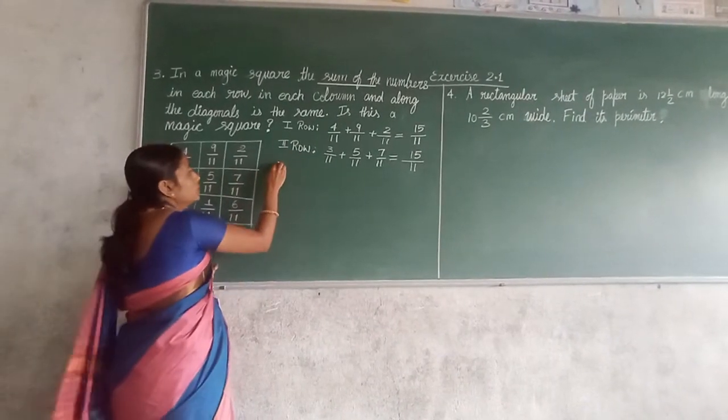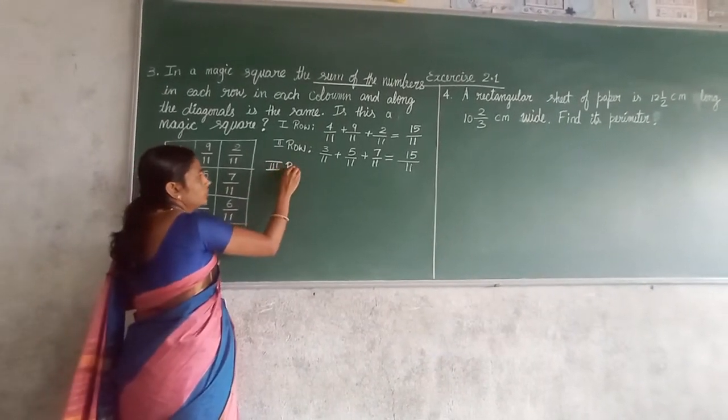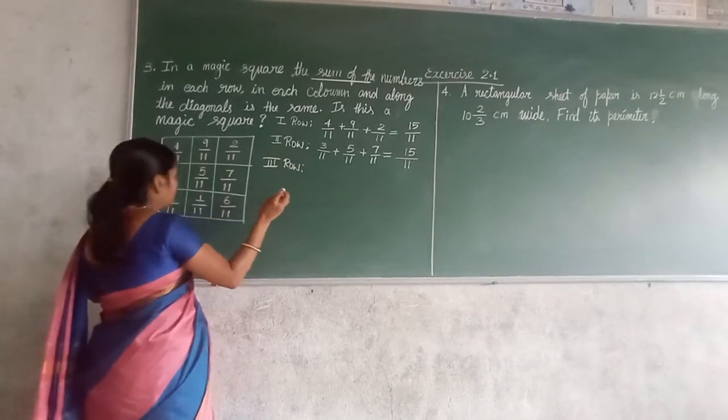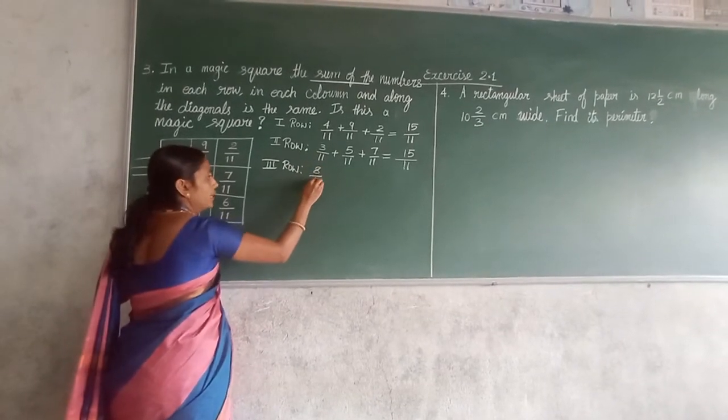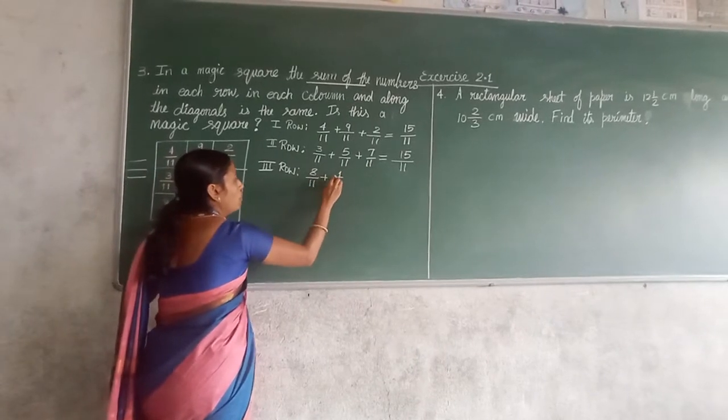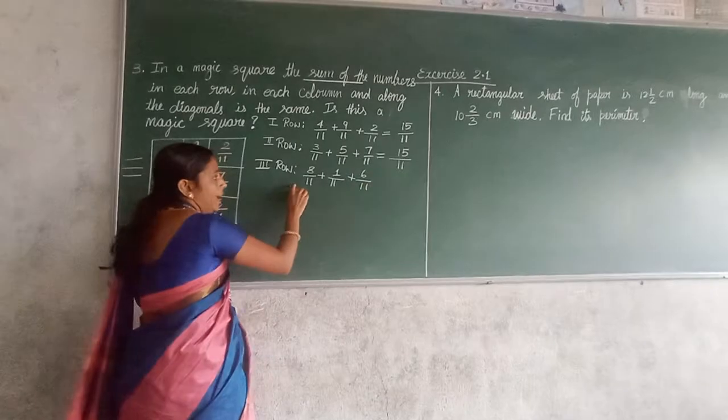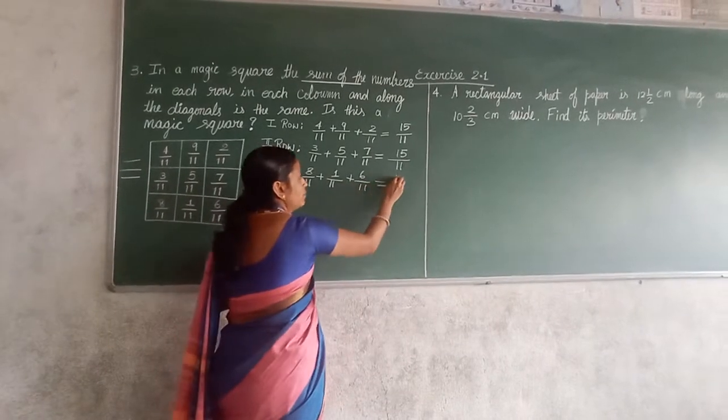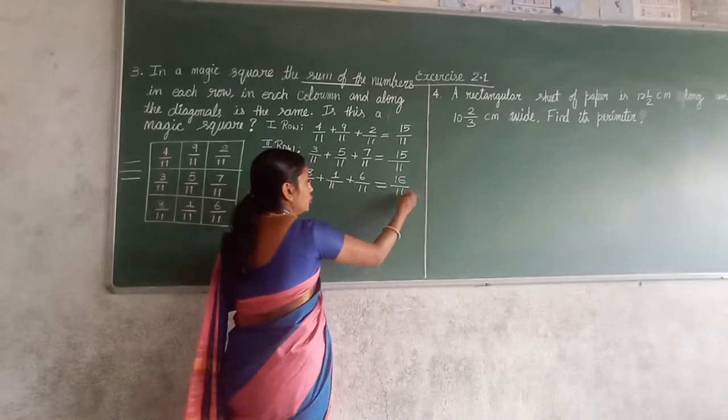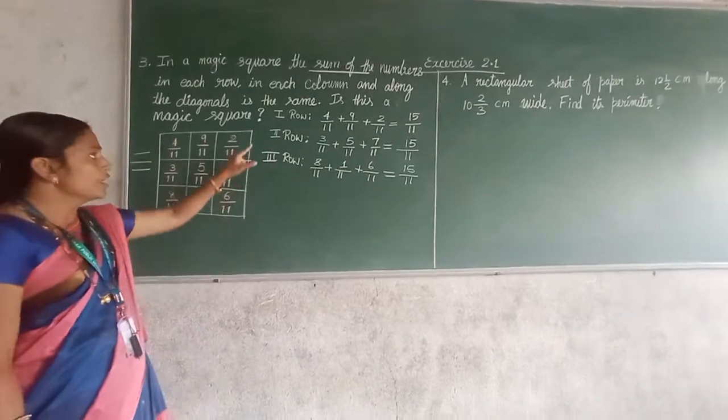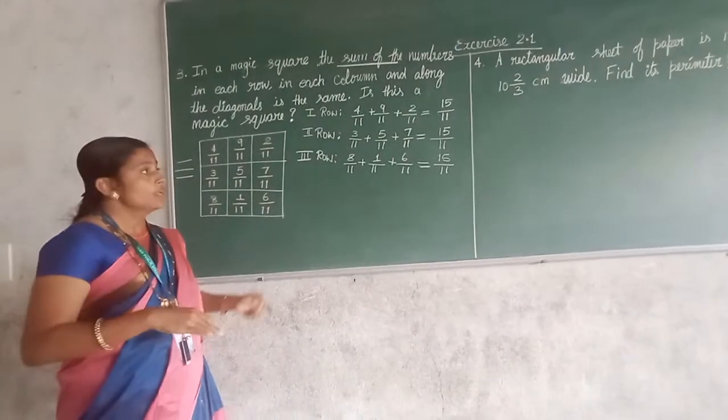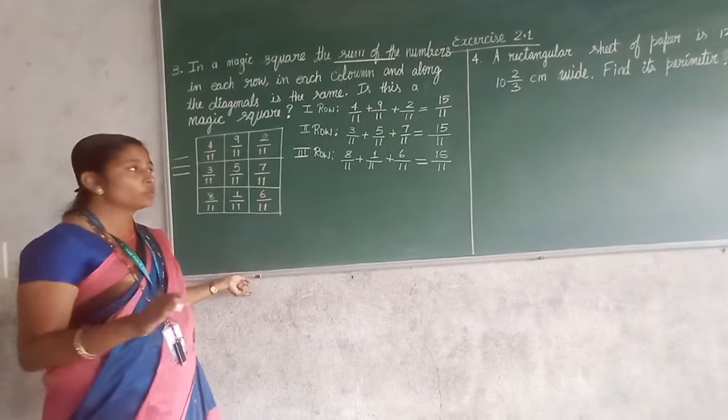Now let us begin with the third row. In the third row, 8 upon 11 plus 1 upon 11 plus 6 upon 11. 8 plus 1, 9. 9 plus 6, 15. Here also the same. Now row is over. The sum is same. You cannot come to the conclusion. You have to check column wise also.